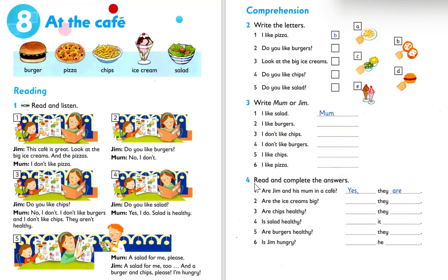Exercise number four: read and complete the answers. Number one: are Jim and his mom in a cafe? The title of the unit is 'At the cafe,' so yes, they are. Number two: are the ice creams big? Yes, they are — you can see it in the conversation: 'look at the big ice creams.'